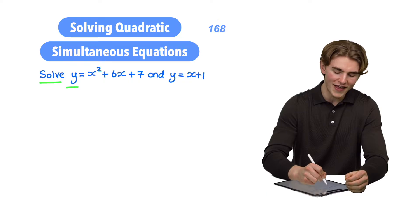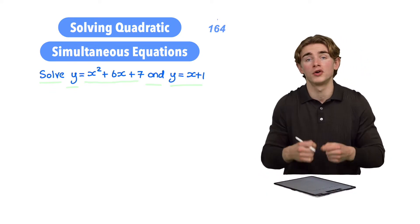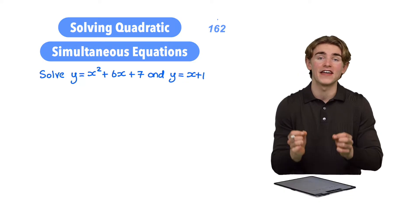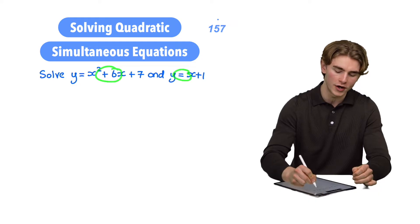It asks us to solve y = x² + 6x + 7 and y = x + 1. Here we have a quadratic simultaneous equations question. Why? Because we're given two equations which have two unknowns.